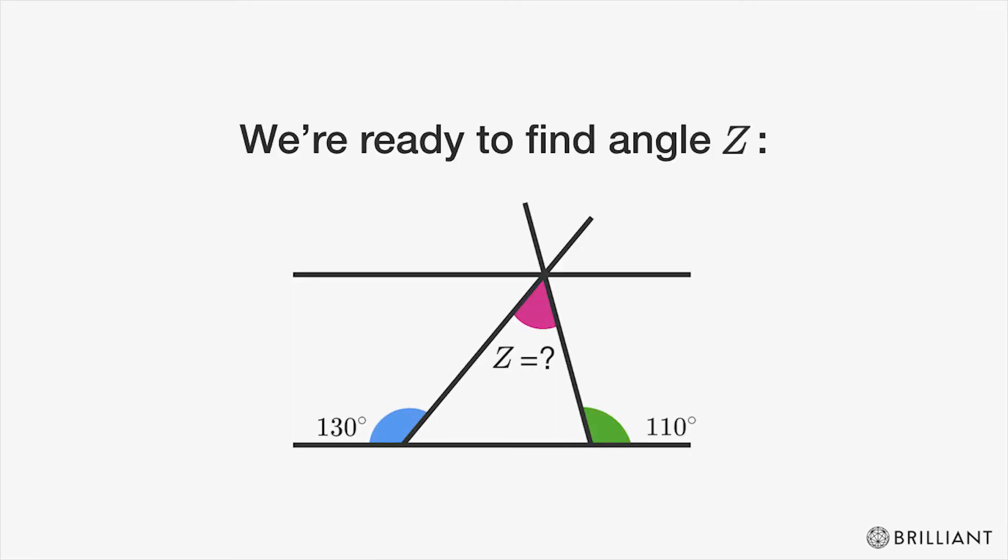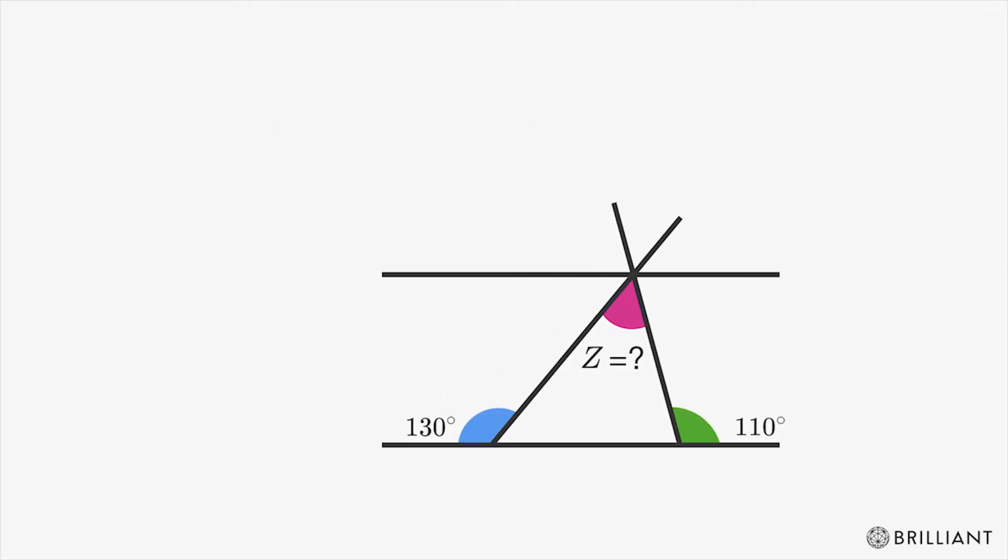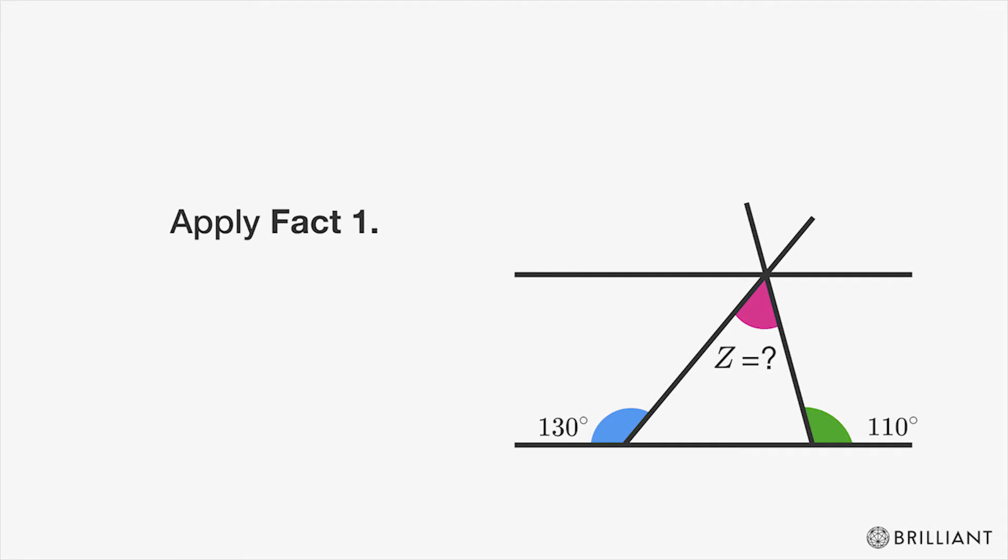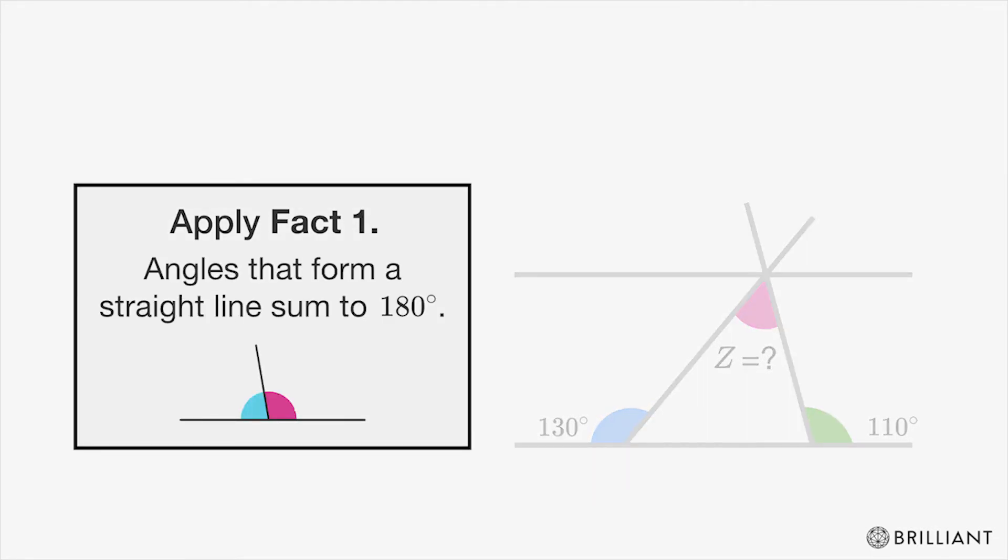We're now ready to find Angle Z. First, apply Fact 1 to the blue and green angles on the bottom. Since these form straight lines, we can figure out what the light blue and the light green angles are.